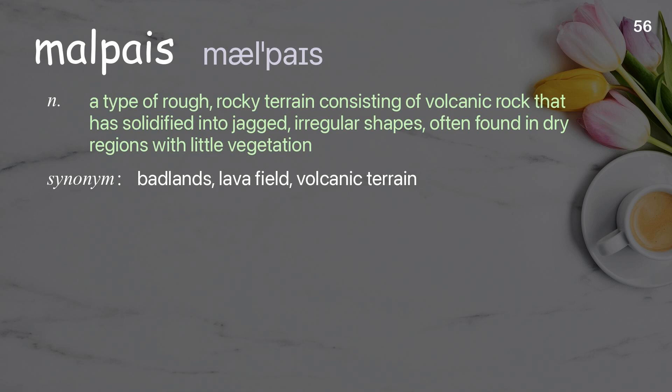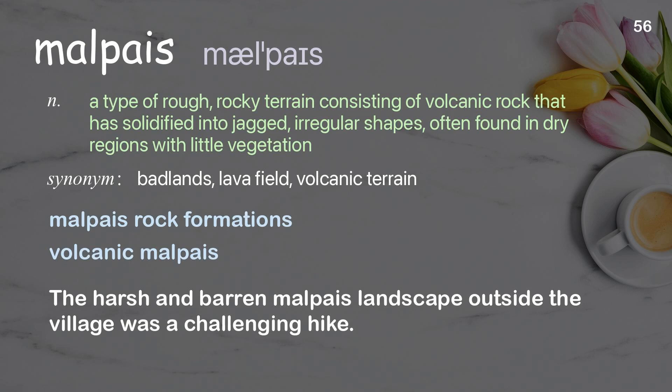Malpais: a type of rough, rocky terrain consisting of volcanic rock that has solidified into jagged, irregular shapes, often found in dry regions with little vegetation. Examples: malpais rock formations; volcanic malpais. The harsh and barren malpais landscape outside the village was a challenging hike.